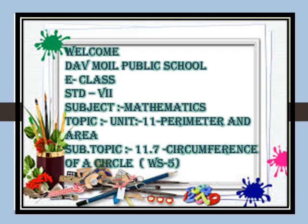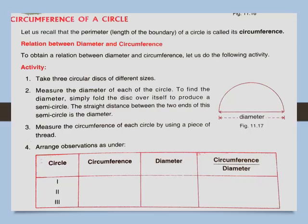Circumference is nothing but the perimeter. The perimeter of a circle means the length of the boundary of the circle, so it is termed as circumference. This is a worksheet file. Let's see the formula for finding out the circumference of a circle. The length of the boundary of a circle is called its circumference, and there is some relation between diameter and circumference.